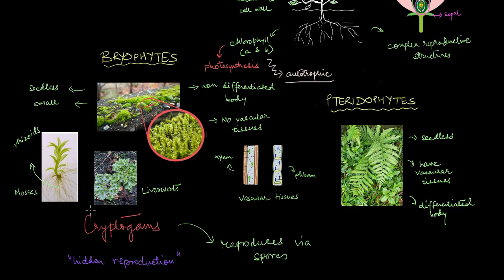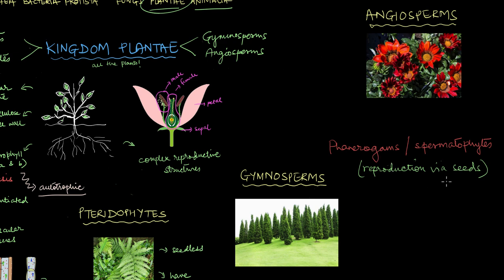Both bryophytes and pteridophytes are often referred to as cryptogams. Breaking this word down: crypto means hidden and gam, from gammy, means to marry — so cryptogam roughly translates to hidden reproduction. These plants reproduce via spores, which aren't really something we can see with the naked eye. On the other hand, plants that reproduce via seeds are called phanerogams or spermatophytes. Pheneros in Greek means visible, so phanerogam roughly translates to visible reproduction, because we can see the seeds of a plant. Phanerogams include the gymnosperms and the angiosperms.